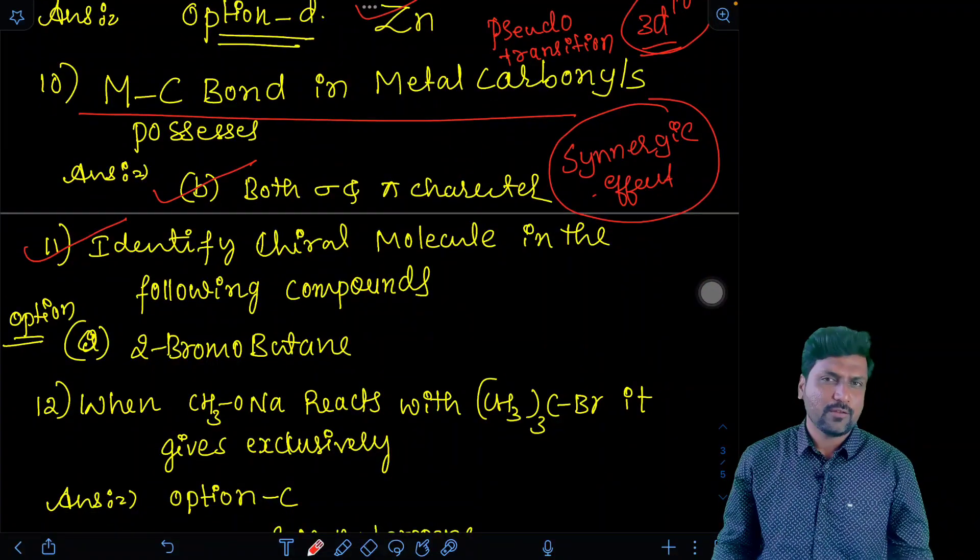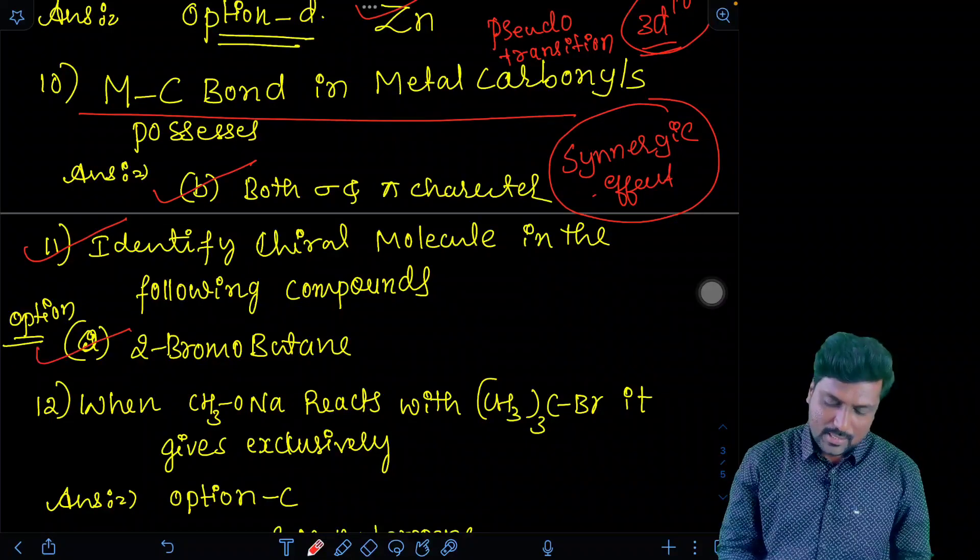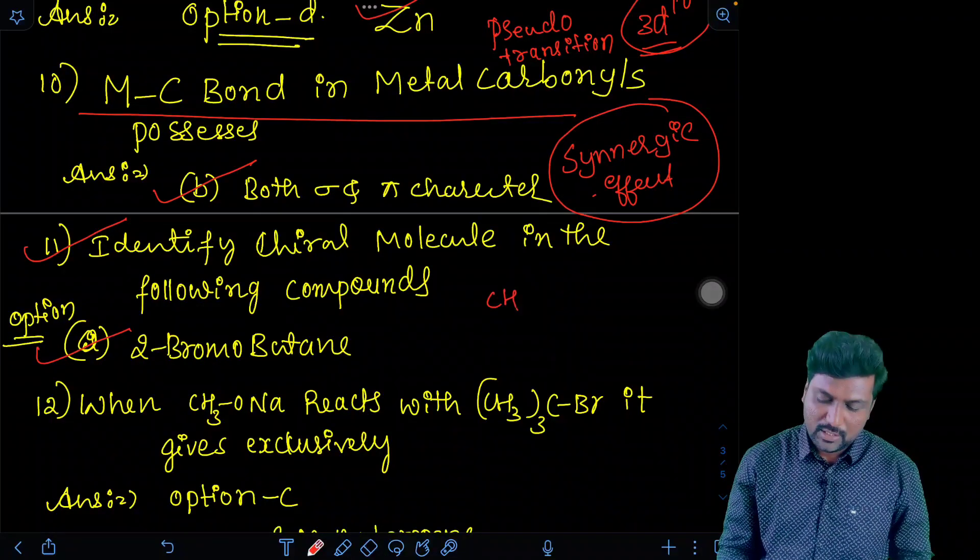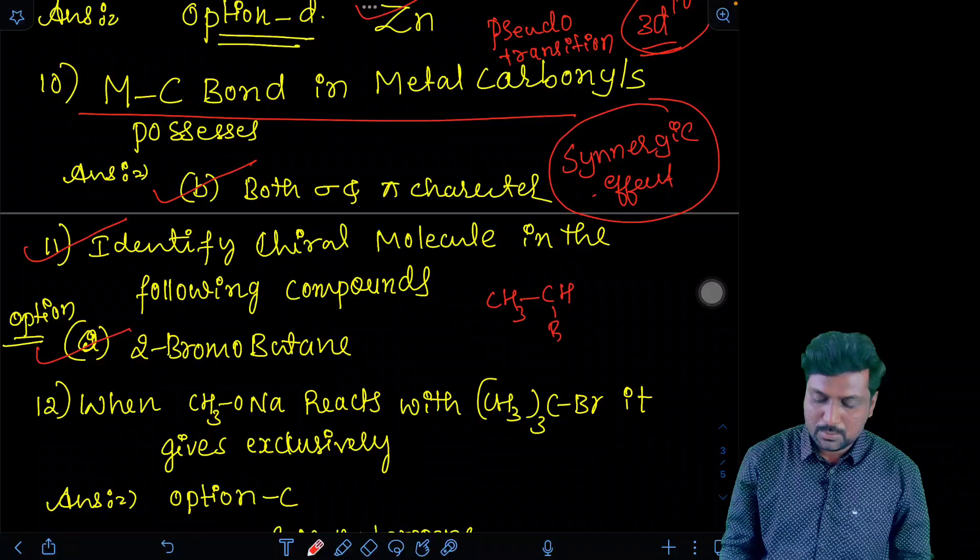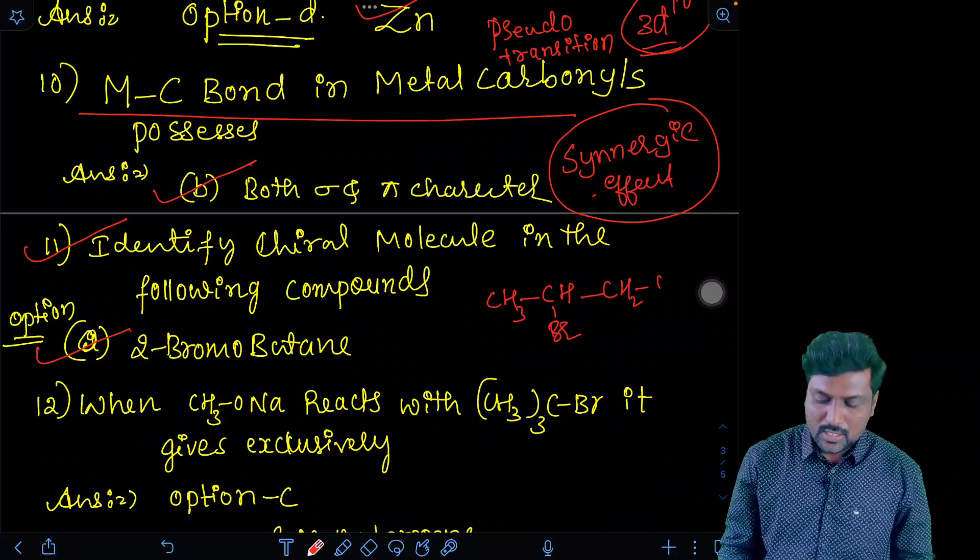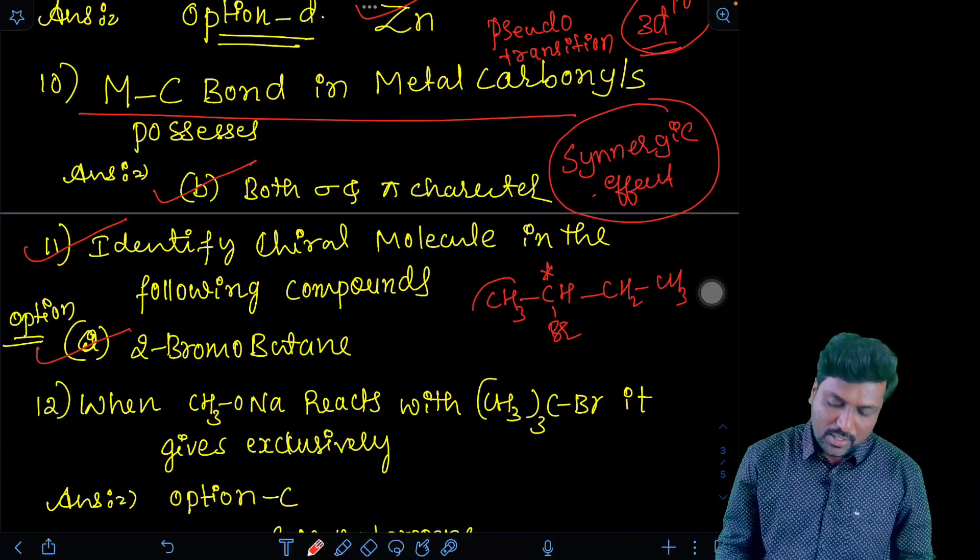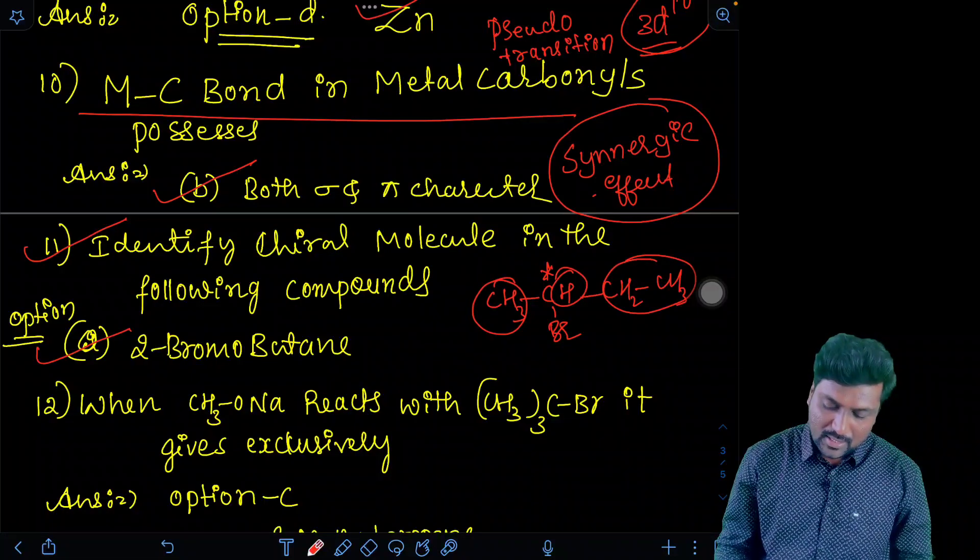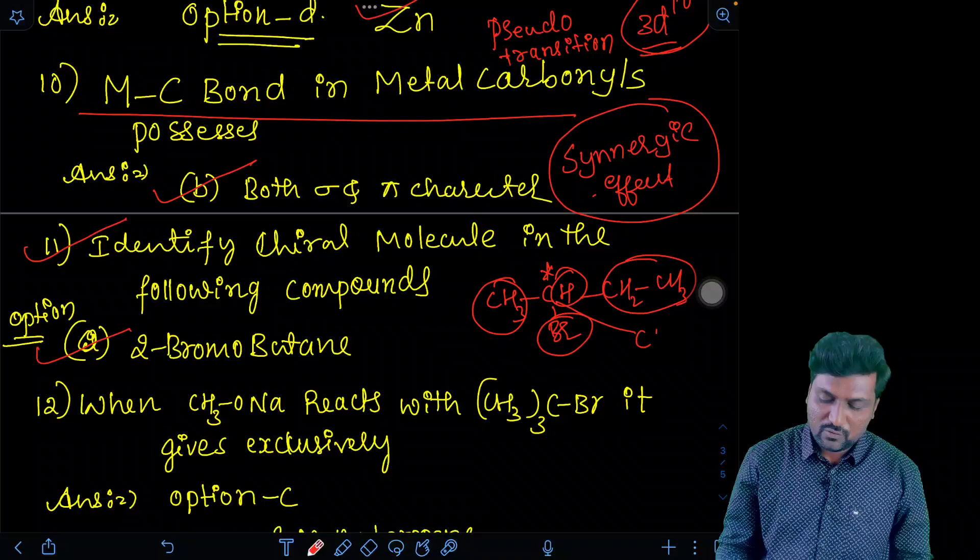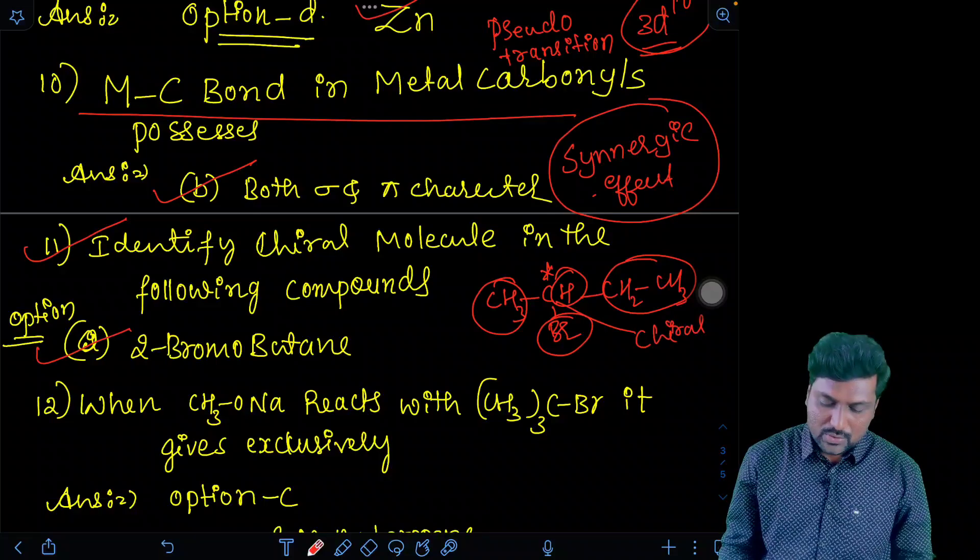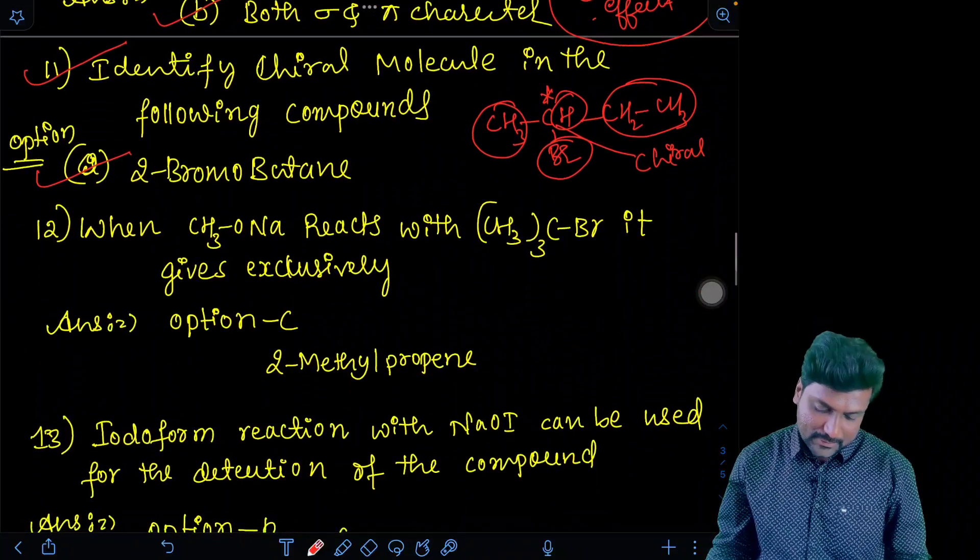Identify the chiral molecule in the following compound. Option A is the answer, that is 2-bromobutane. I will give you the structure. CH3, CHBr, single bond, CH2, CH3. Look at this second carbon. Second carbon is bonded with CH3, ethyl, hydrogen, Br. So therefore, it is chiral carbon. So therefore, it is a chiral molecule.